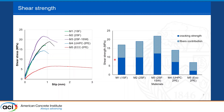Comparing Mix 1 and Mix 2, both have the same UHPC matrix so they show the same cracking strength. However, the post-cracking strength of Mix 2 is higher because it has 2% fibers compared to 1% in Mix 1. Mix 3 has a stronger matrix — due to the steel wool — giving higher cracking strength, and its post-cracking contribution is almost similar to Mix 2 since they have the same fiber content.